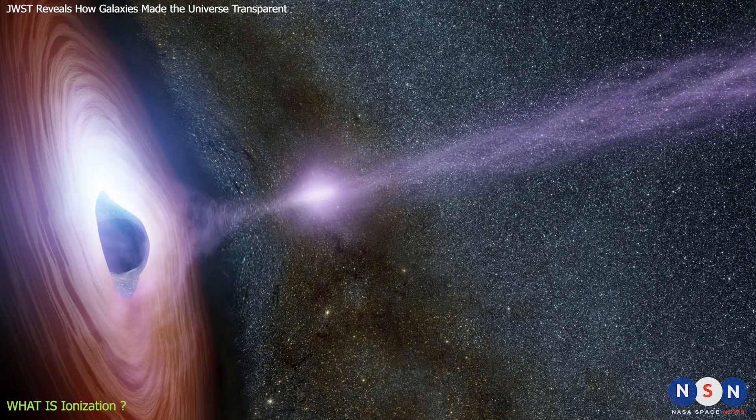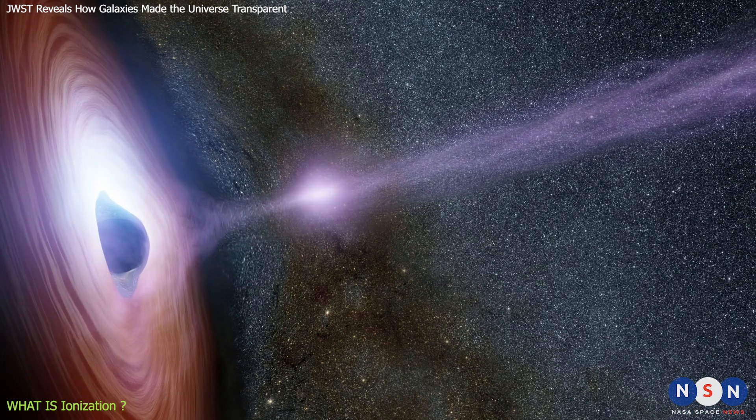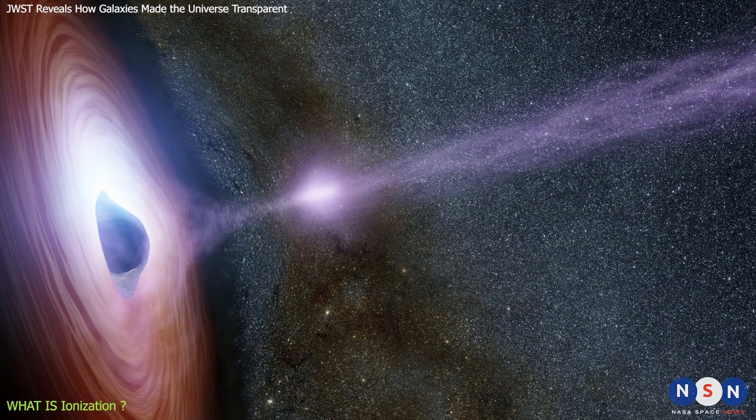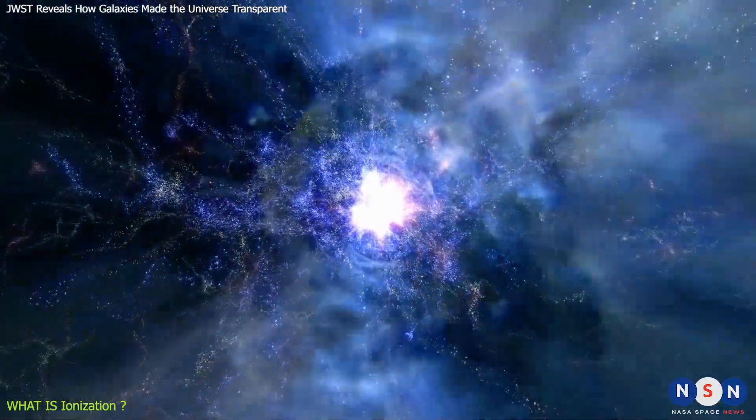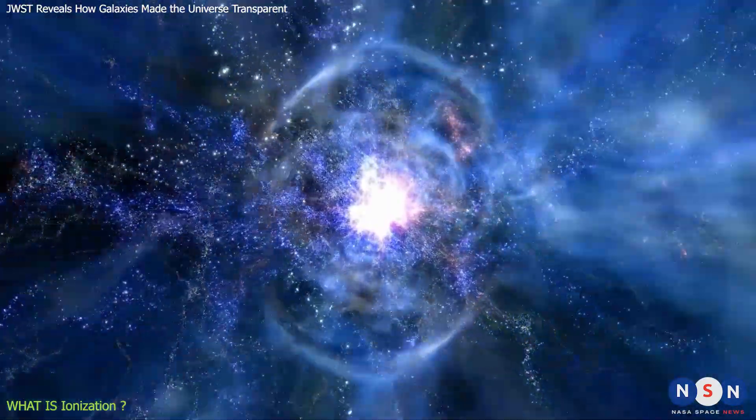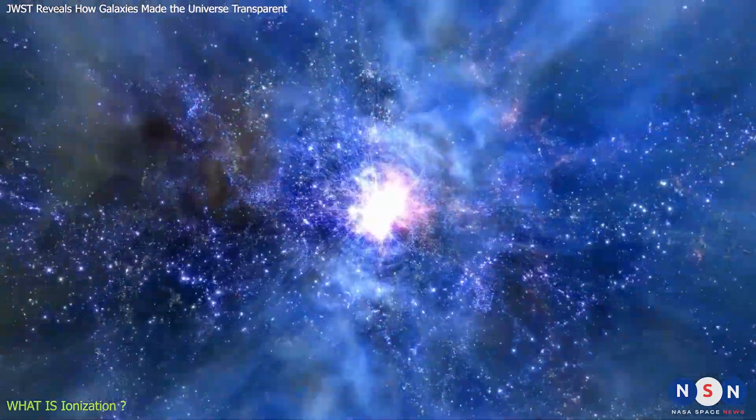It can be influenced by various sources of light, such as stars, quasars, or gamma ray bursts. And depending on the intensity and wavelength of this light, the intergalactic medium can undergo different phases of ionization.